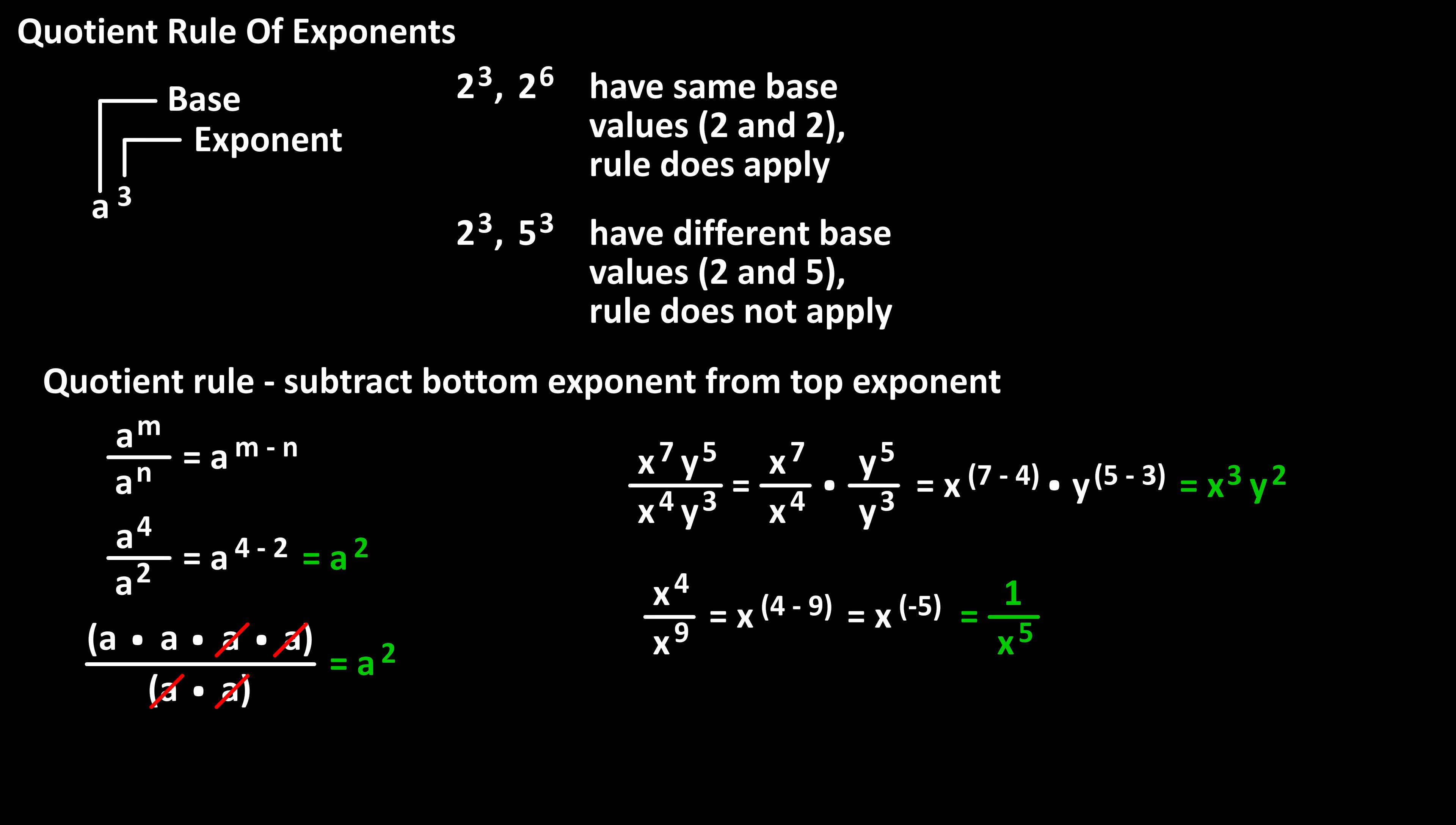To prove this, if we write this out from our original equation, we have 4 x's in the numerator and 9 x's in the denominator. We can cancel out 4 of these x's and we are left with 1 over 5 x's, or 1 over x raised to the 5.